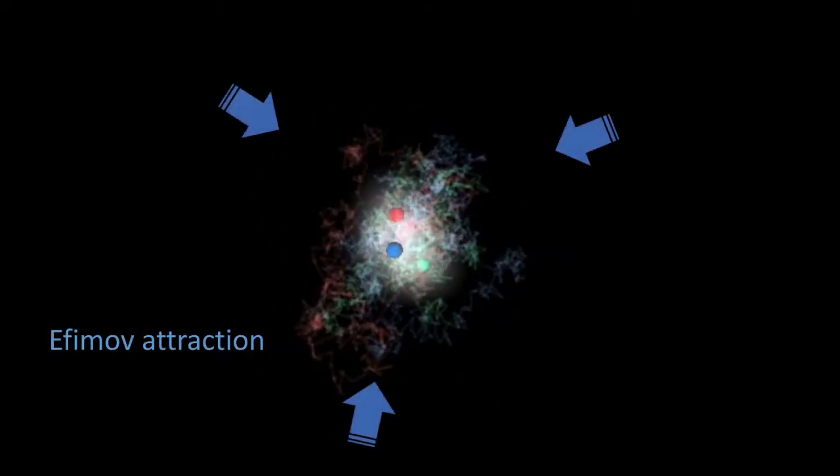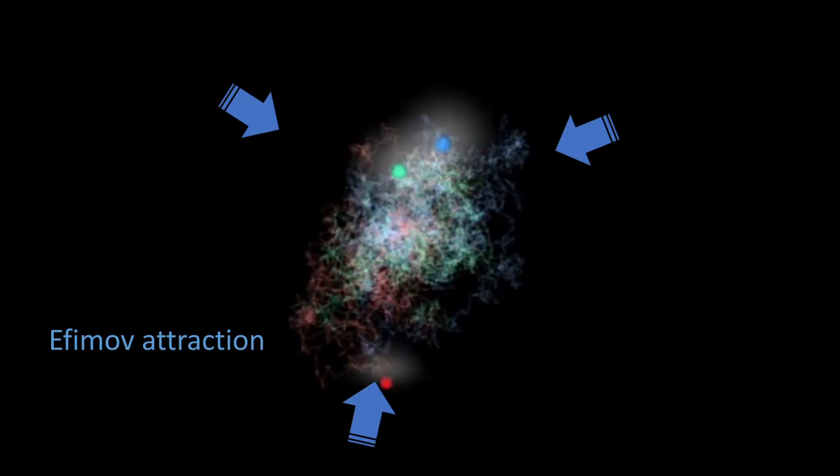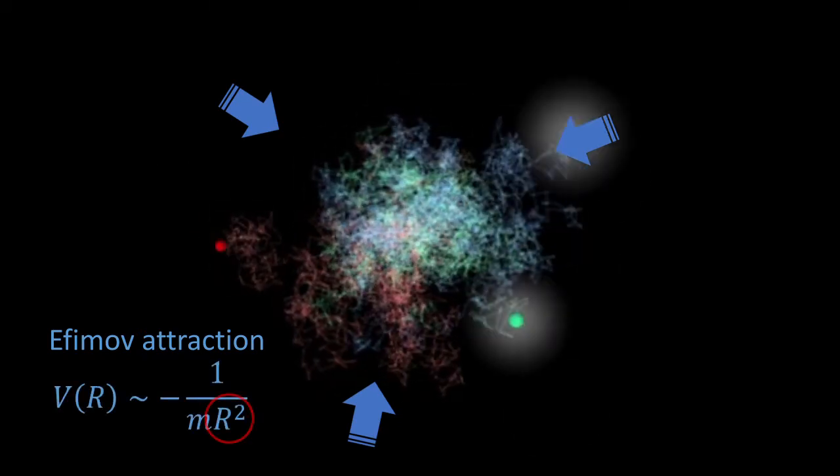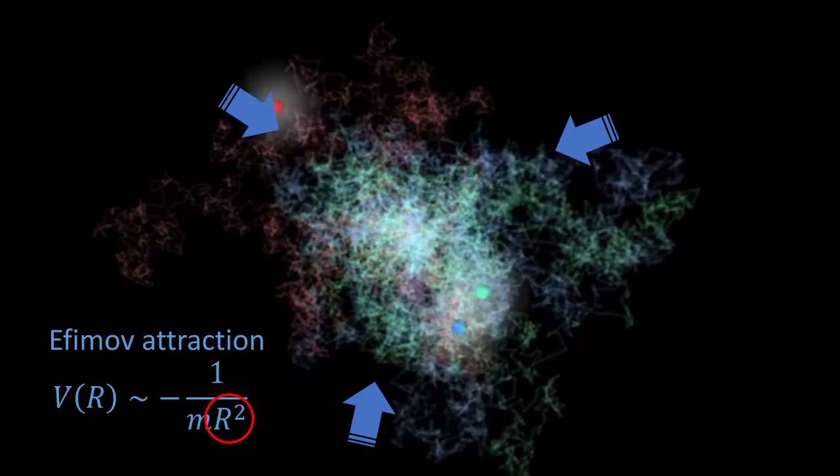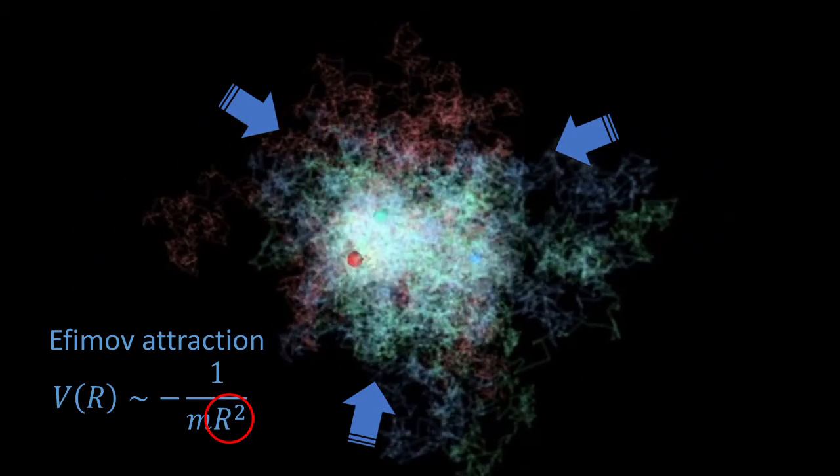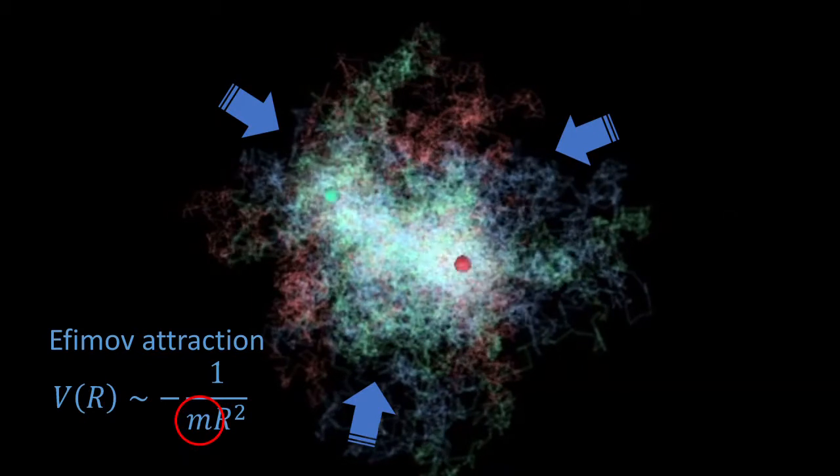Vitaly Yefimov considered the case of three particles in this situation. Solving the Schrödinger equation, he found that an effective long-range three-body attraction appears. This potential decays as 1 over R squared, where R is the average distance between the three particles, and is universally determined by the mass of the particles.